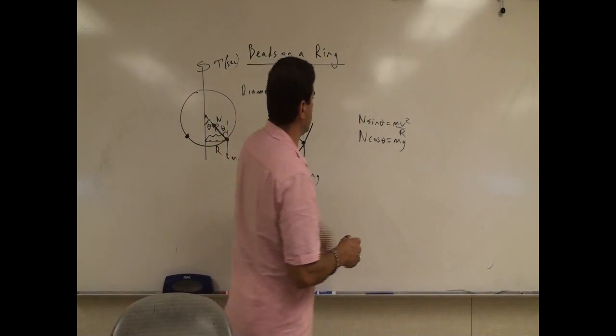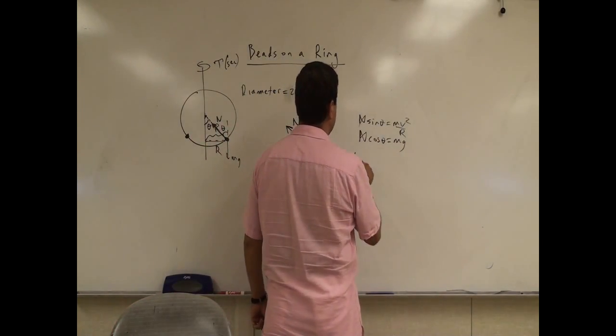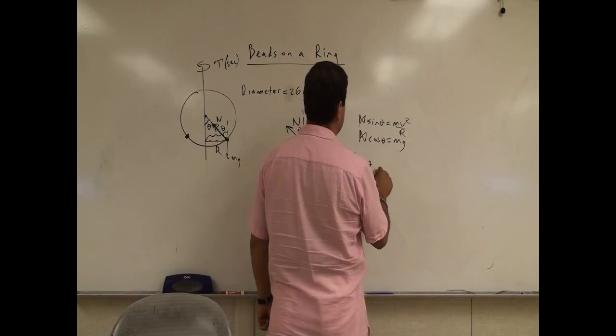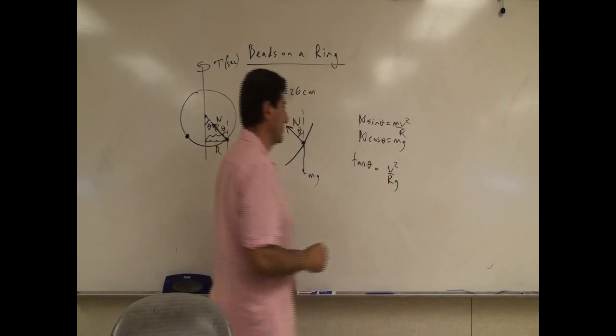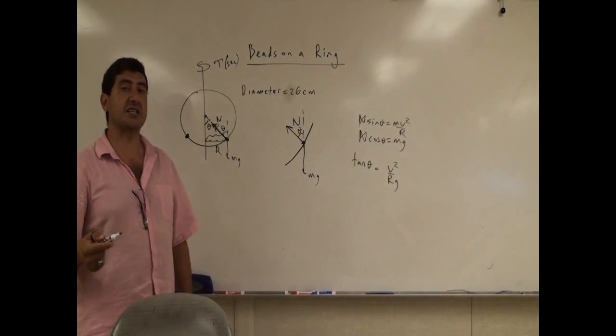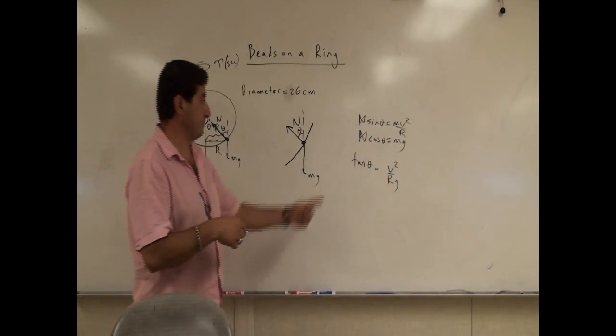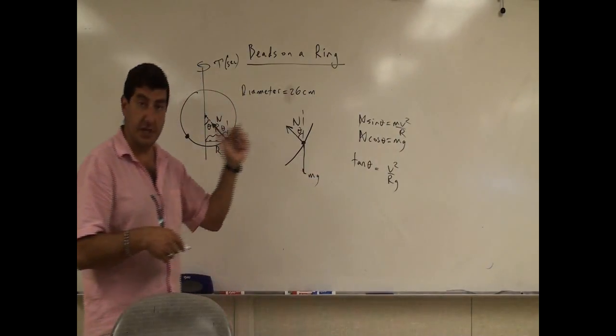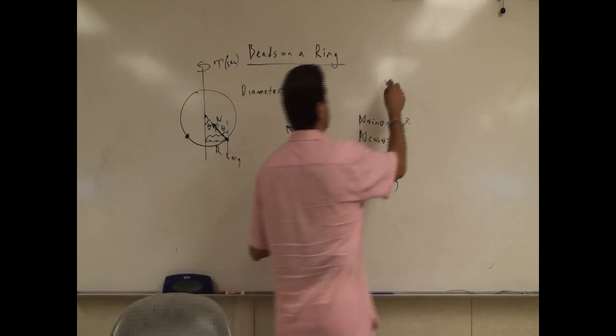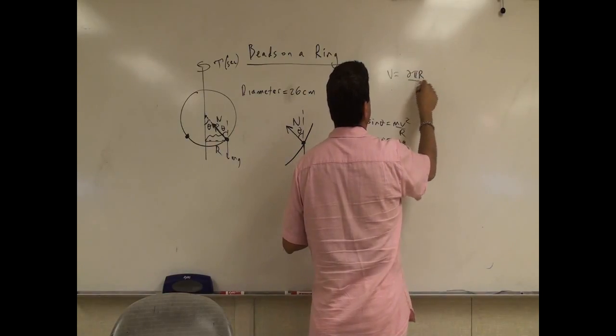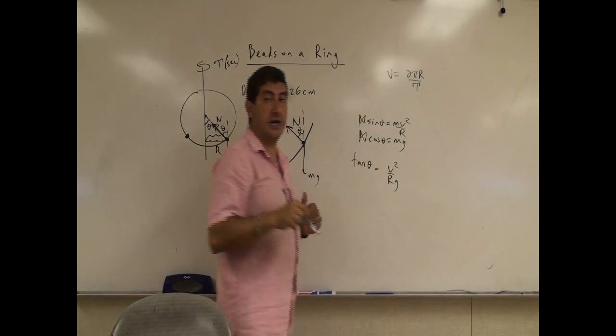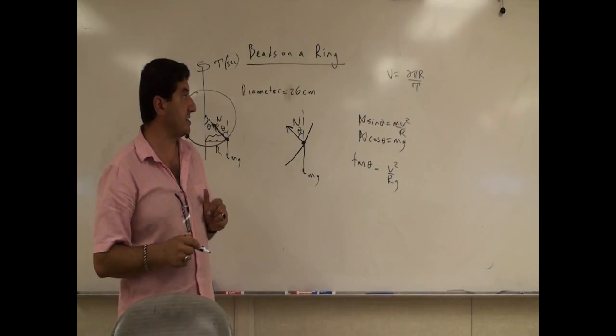So then I can divide these two. Then the n cancels. We have tangent theta is equal to, the m's cancel, v squared over rg. But I want to express this in terms of the period of the motion. In the past we've done this with other problems where we say velocity is 2 pi r over period.